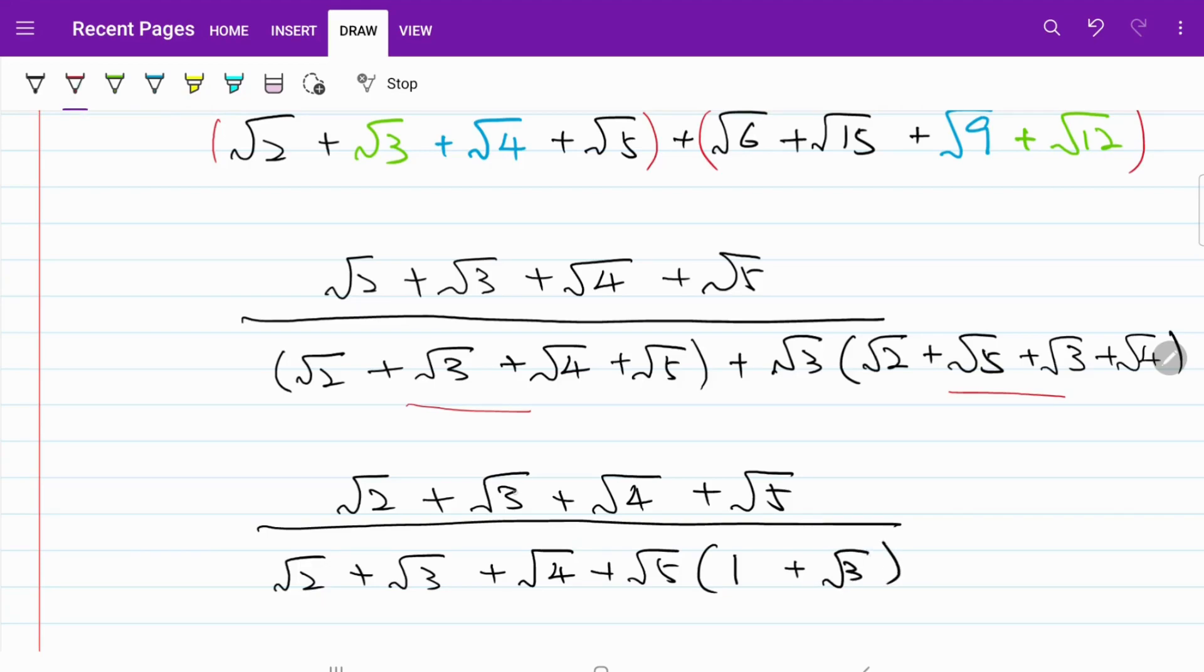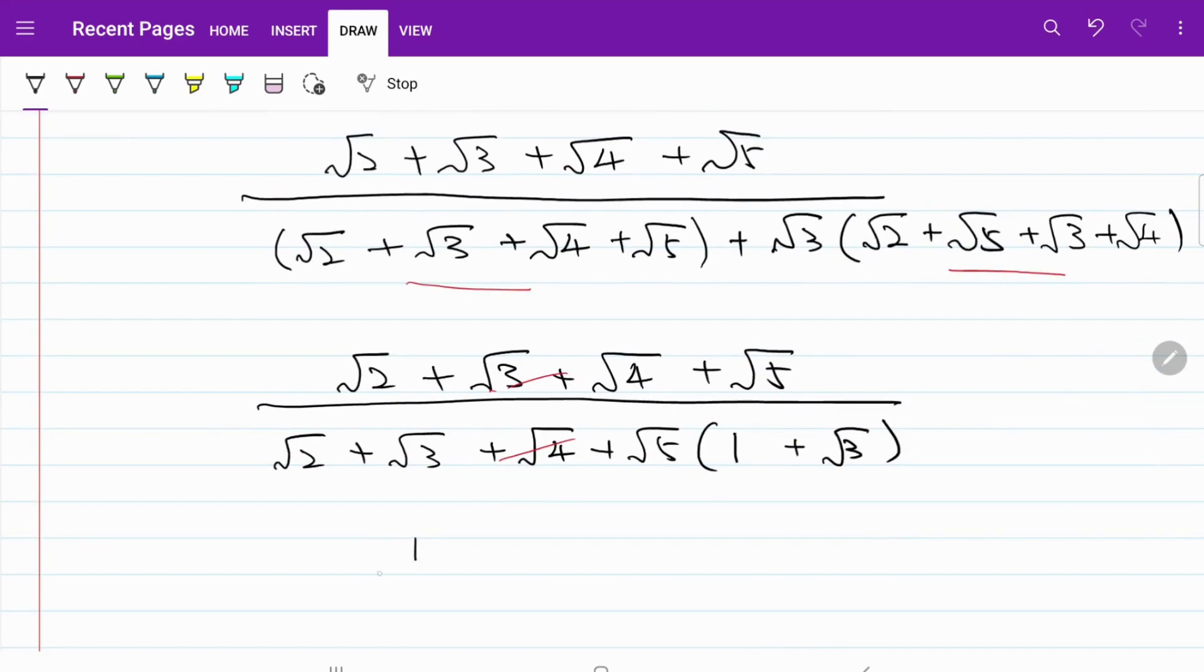From here this series of numbers will cancel each other and I'm left with the answer of 1/(1 + √3). At this step we can go ahead and rationalize the denominator by multiplying (1 - √3), which is the conjugate, and I'm doing the same thing with the numerator. So what I end up with is (1 - √3)/(-2). If you notice the numerator is actually a negative number as well, so if I change the sign then it will become (√3 - 1)/2, and that's the final answer for today's question.